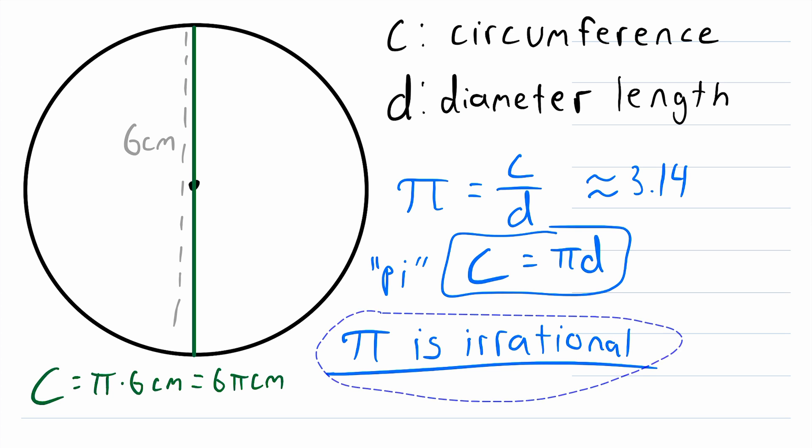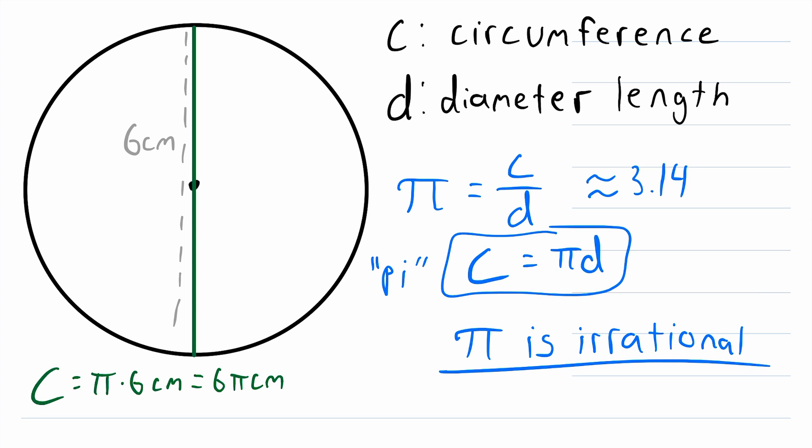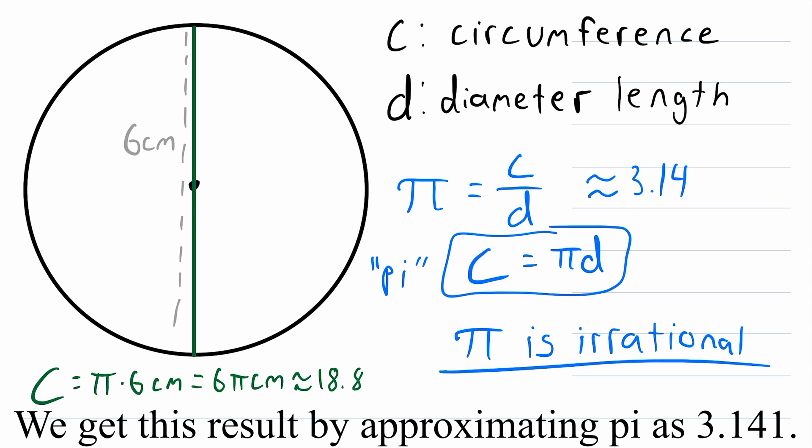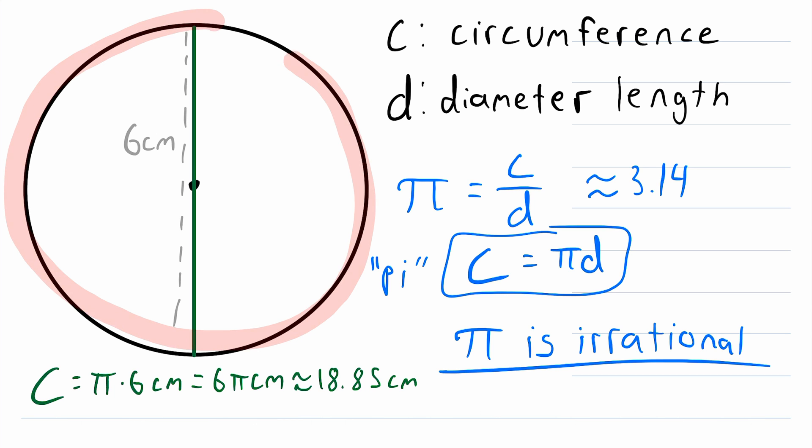And then if we wanted to write this in decimal form, remember that we'd have to approximate it since we're multiplying by pi. But if we want to approximate it, it is about 18.85 centimeters. So the circumference of this circle with a diameter length of 6 centimeters is equal to 6 pi centimeters, which is approximately 18.85 centimeters.